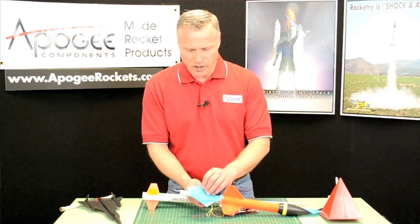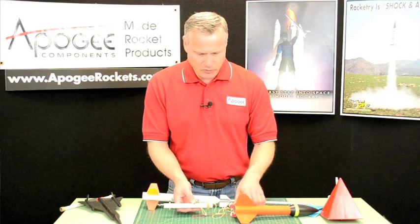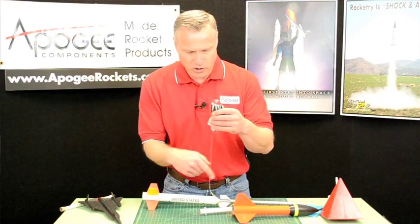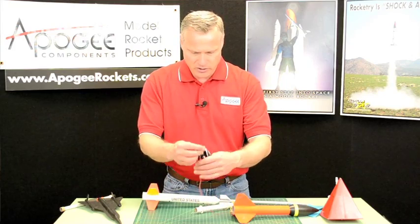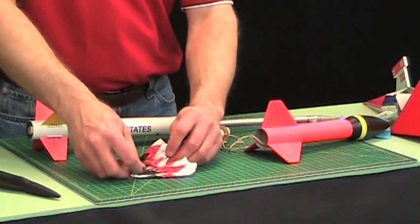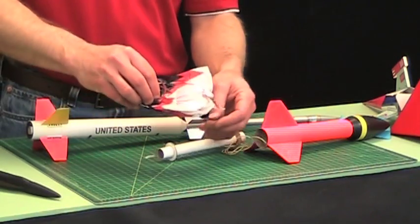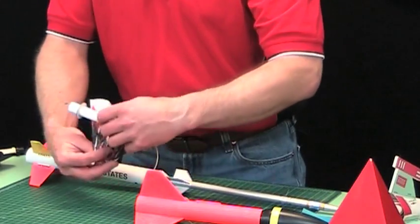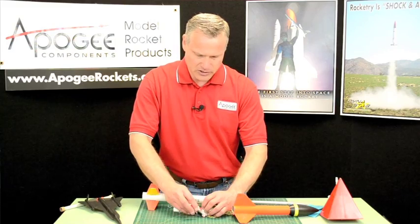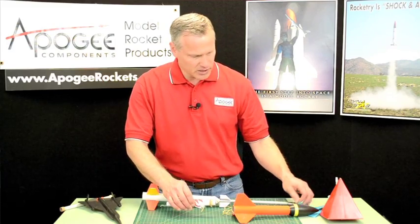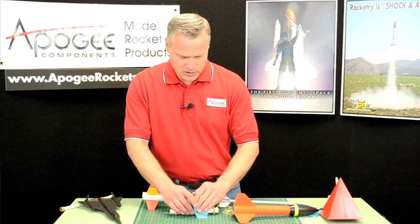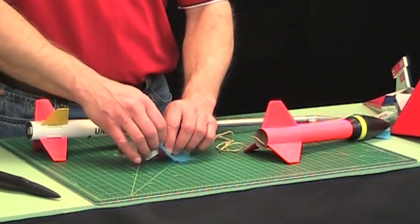You can also take some wadding and once you wrap your parachute up. Now, when you wrap your parachute, don't wrap the strings around the parachute, because the parachute will need to unfurl pretty quickly. So I just lay the strings inside and then just wrap the canopy around the outside like this. And then you can take some wadding and this gives you a little extra protection and wrap that around the outside.